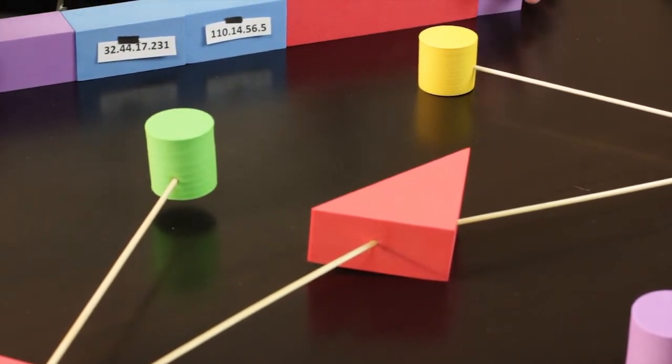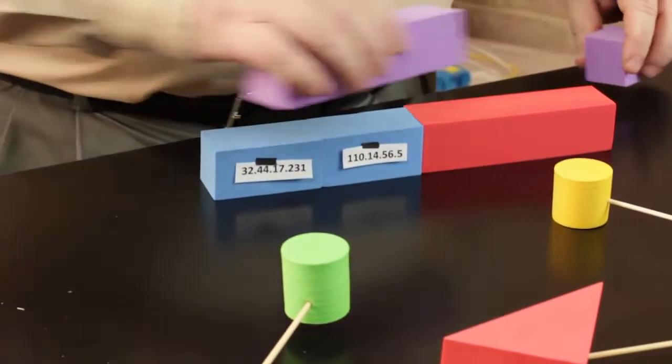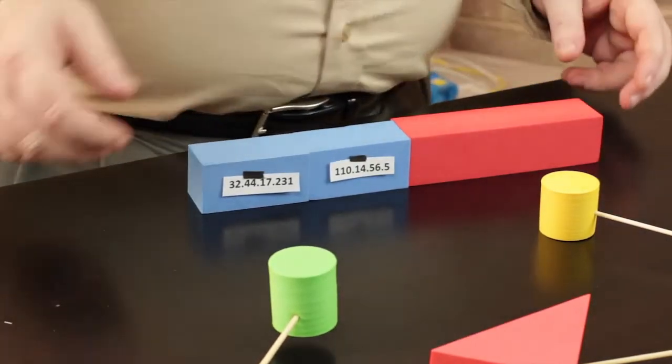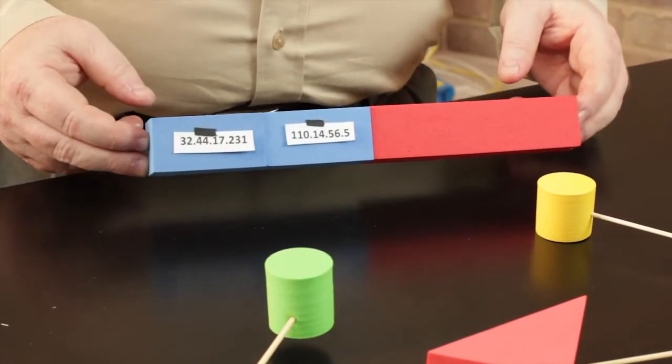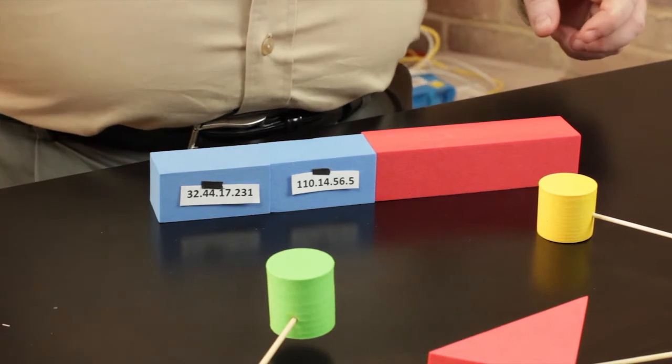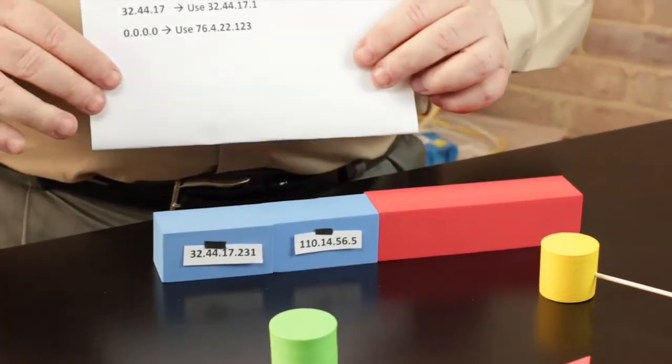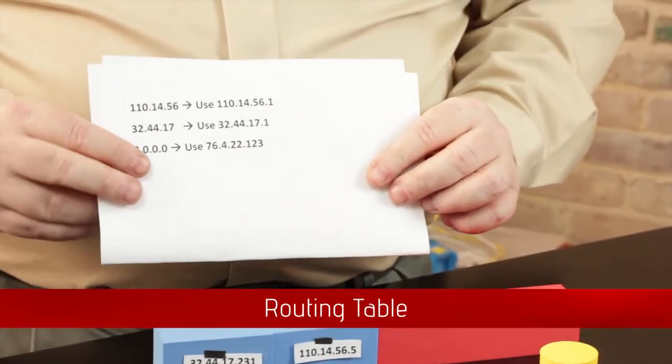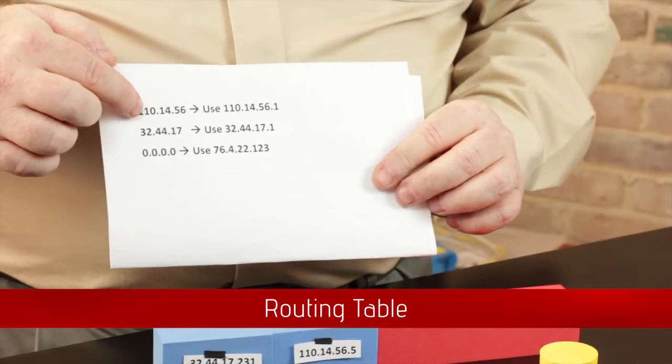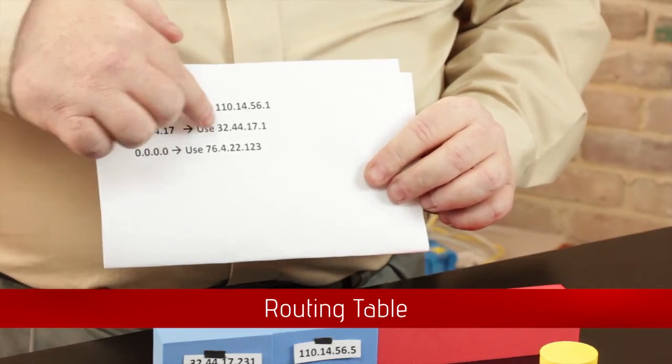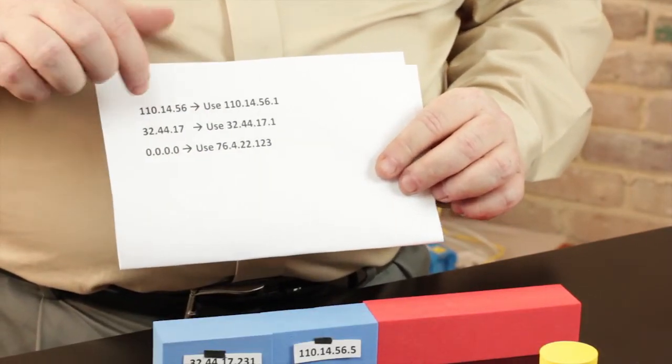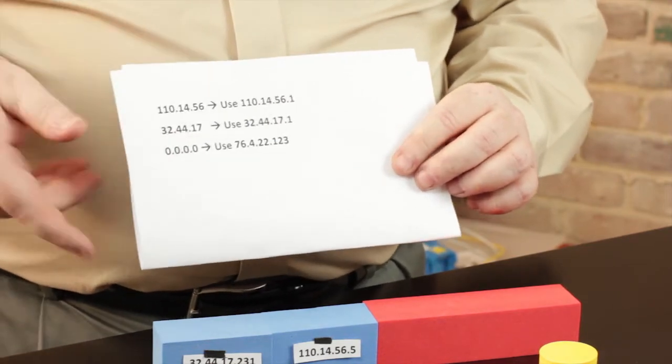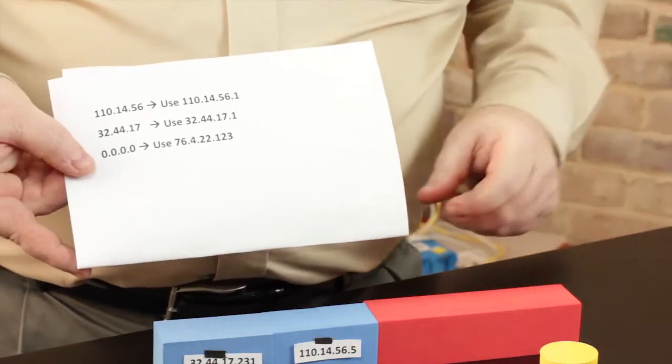Now once it gets into the router, the router strips away all of the frame stuff leaving just the IP packet. Built into every router in the universe is something called a routing table. The routing table tells, based on whatever the network information is, where to send data. So in this case, because it's a very simple network, it knows basically just to send it out on the other side.